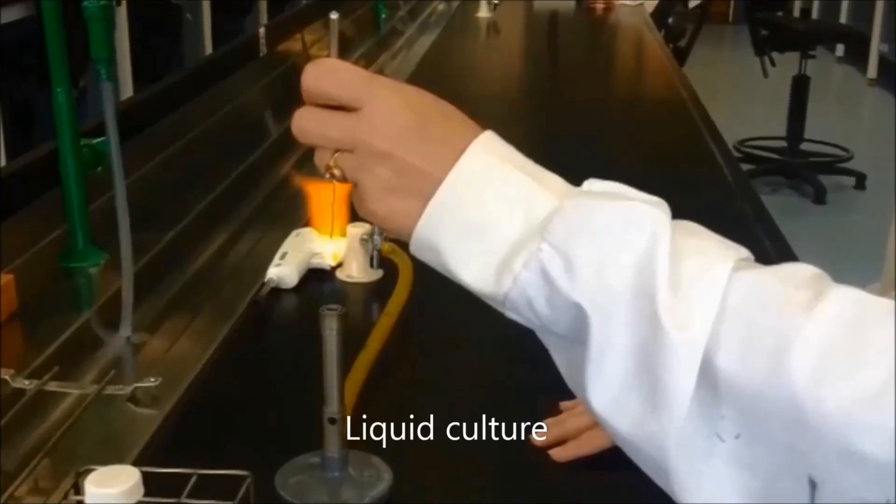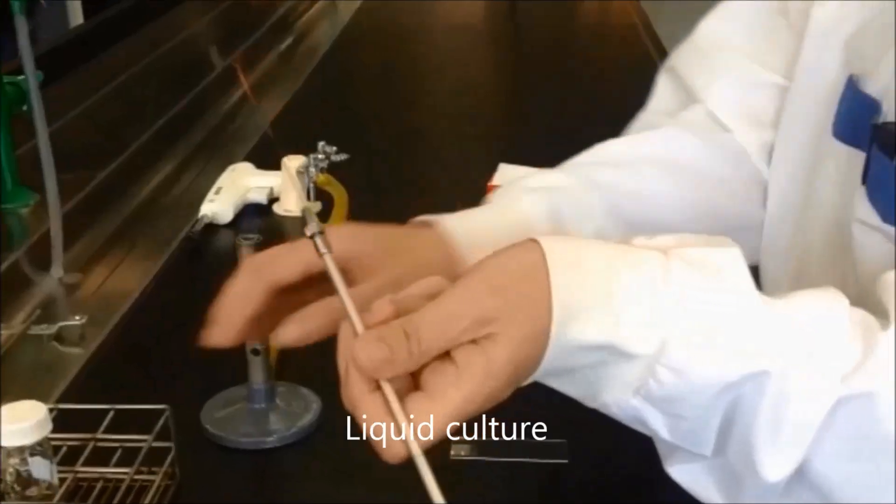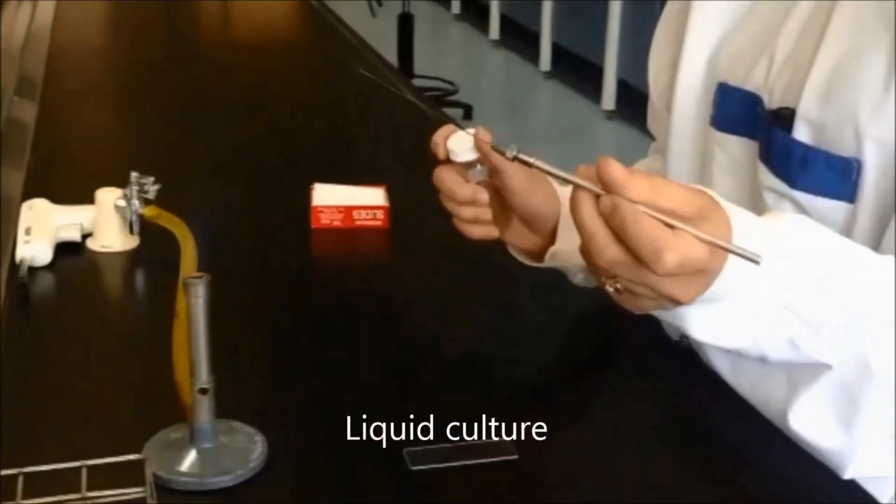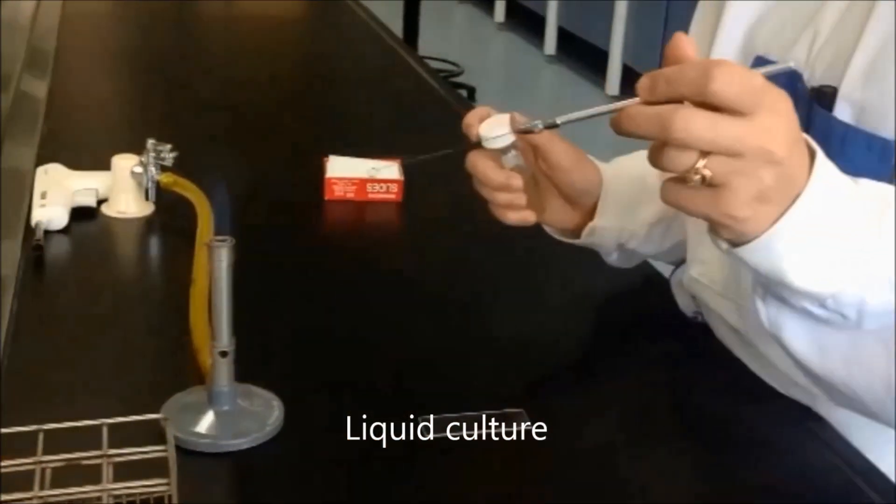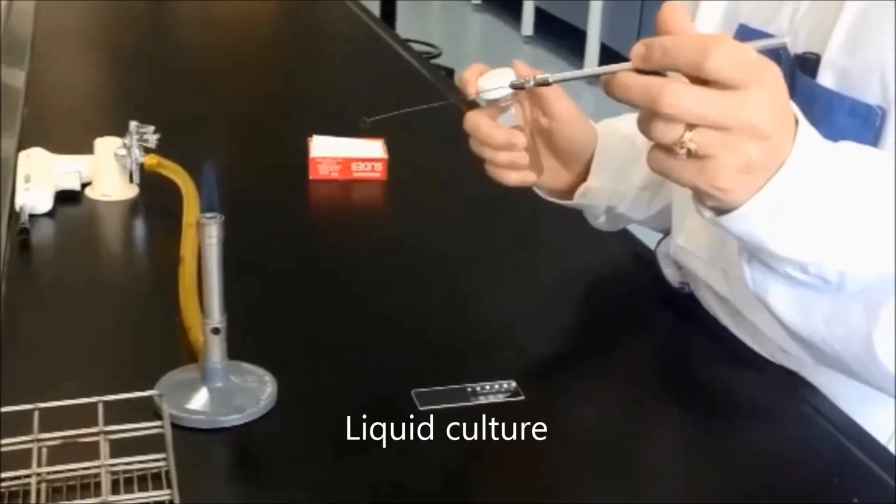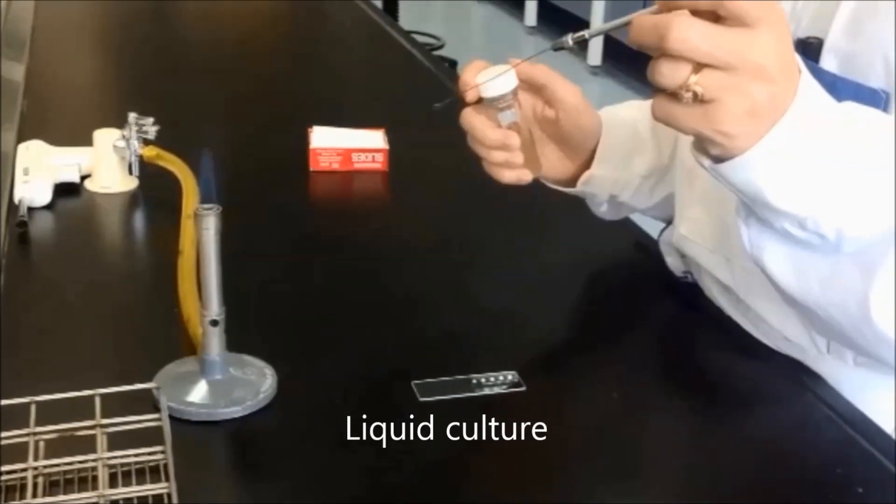Before you start Gram staining, you need to make a fixed smear of your culture on a clean slide. To make a smear of a liquid culture, for example from a broth, sterilize a metal inoculation loop by flaming.